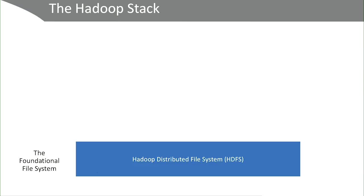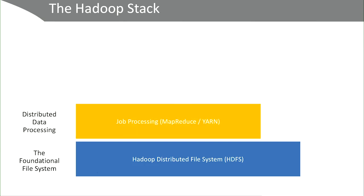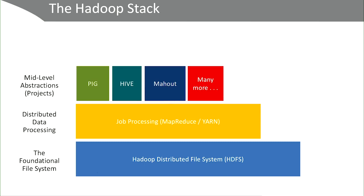Hadoop is built on two foundational layers. One is the underlying database called the Hadoop Distributed File System, or HDFS. Then there's the processing layer — commonly MapReduce, and then Yarn, which is an abstraction layer that sits on top. Hadoop also has open-source projects that allow it to do extra things, with interesting names like Pig, Hive, Mahout, and many others. There are dozens of different open-source Hadoop projects, all built to do different things and connect to different types of data sources.